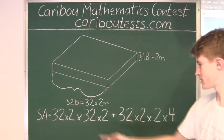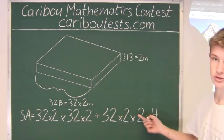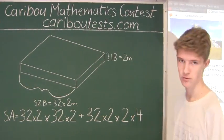So therefore we know that surface area is 32 times 2 times 32 times 2 plus the 4 sides which is 32 times 2 times 2 times 4.